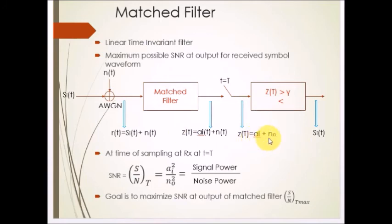After that, there is the sampling scenario. The receive signal equals signal part plus noise part. When you collect its sample at time t equals capital T, the signal becomes z(T) equals a_i plus n_0, where a_i is the signal sample and n_0 is the noise part. After that, you perform detection - you check whether the signal is above a particular threshold or below it. If it's above, it's one of the transmitted signals; if below, it's the second transmitted signal. Through this, you complete the decoding process and recover the transmitted signal s(t).